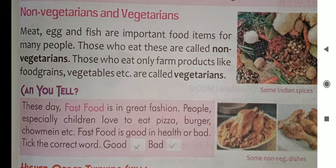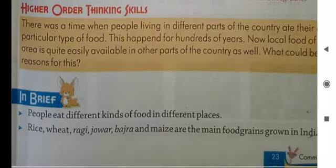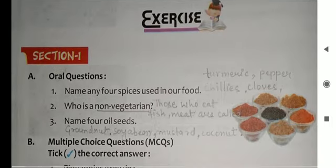Those who eat only farm products like food grains, vegetables, rice, and all vegetables are called vegetarians. This chapter is now complete. Let's start our exercise.